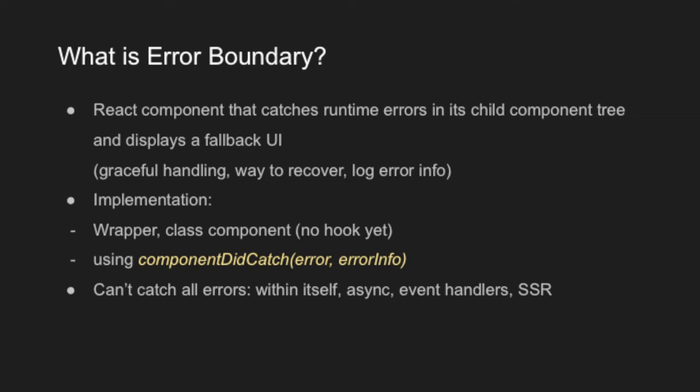Error boundary itself does not resolve all these errors, but it offers a way to gracefully handle them. For example, we can display a user-friendly fallback UI and maybe add a retry button for the user to recover from the errors. We can also send this error information through an API call to the server for future solutions. In terms of implementation, error boundary is used kind of like a wrapper — you wrap it around components where runtime errors are likely to happen, or you can declare it once and use it throughout your entire application since this component is highly reusable.